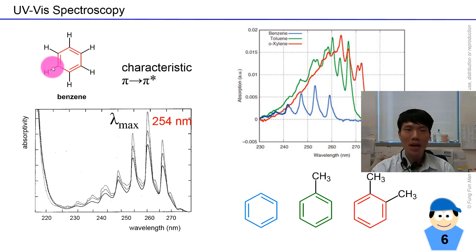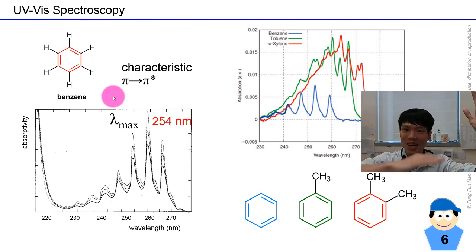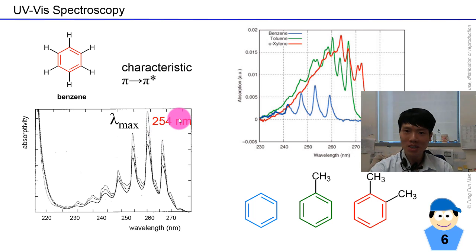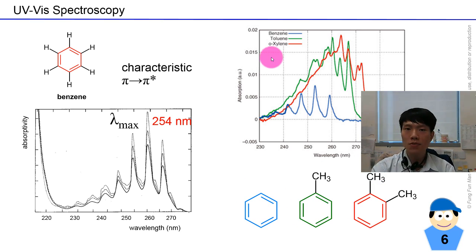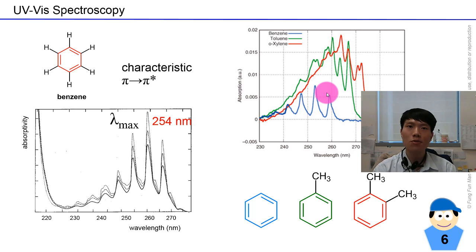Let's look at benzene. For benzene, you have C=C double bonds, which means pi bonds, so pi-to-pi-star electronic transition is allowed. The lambda max shows many peaks because there are three pi bonds and many sigma bonds — many layers of possibilities. The highest absorption is at 254 nm. As we progressively add methyl groups to the benzene ring — benzene, toluene, and xylene — the electronic spectra differ. We don't typically use UV-Vis to distinguish these molecules, though the different spectra do have characteristic signatures for each.